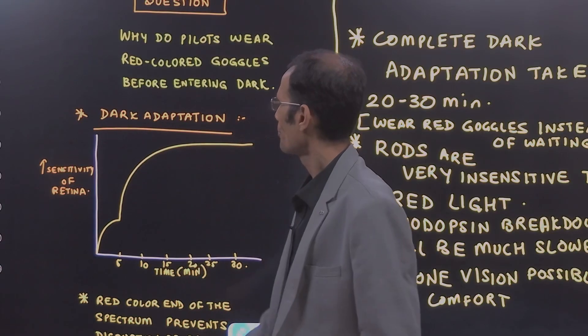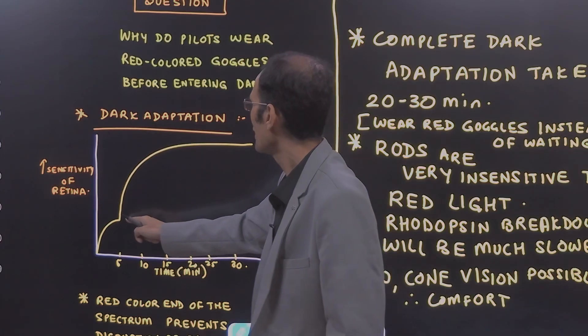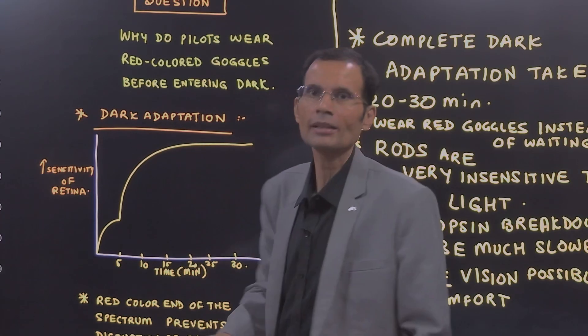Dark adaptation curve. Initial part, the quicker adaptation is by the cones but the later slow and sustained part is by the rods.